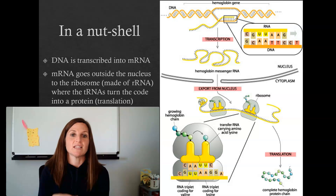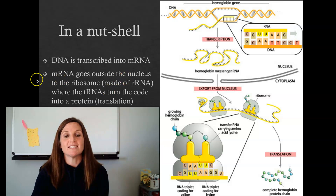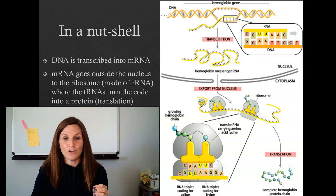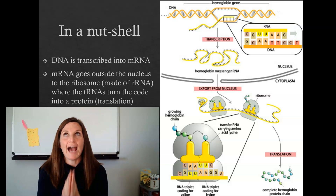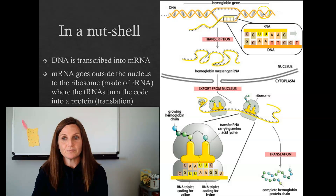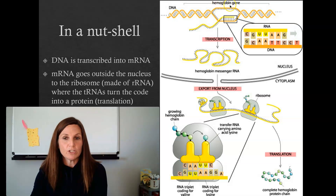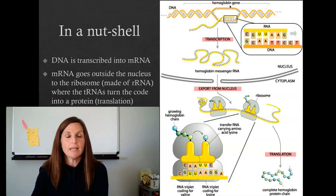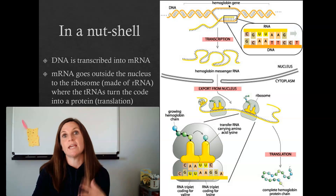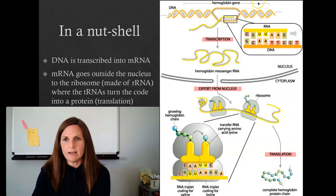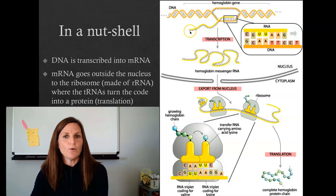I'm going to start with an overview of what happens during protein synthesis. We're looking at the hemoglobin gene — this is the gene for hemoglobin, which is a protein in your blood that attaches to oxygen and carries it throughout your blood. This section of DNA right here is that gene, and the first thing we're going to do is transcribe the gene.